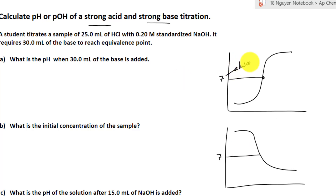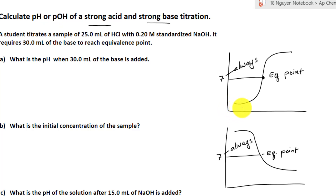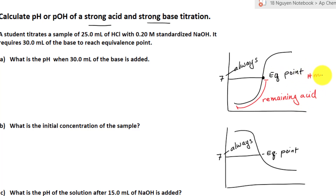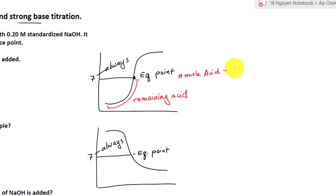This is always a pH of 7, and this is the equivalent point. Before we solve any particular problem, we need to understand what the graph is really telling us. If I am titrating a strong acid with a strong base, what's happening in this region is the remaining acid that is not neutralized by the base will determine the pH. Right here, we have the number of moles of acid equal to the number of moles of base at the equivalence point.